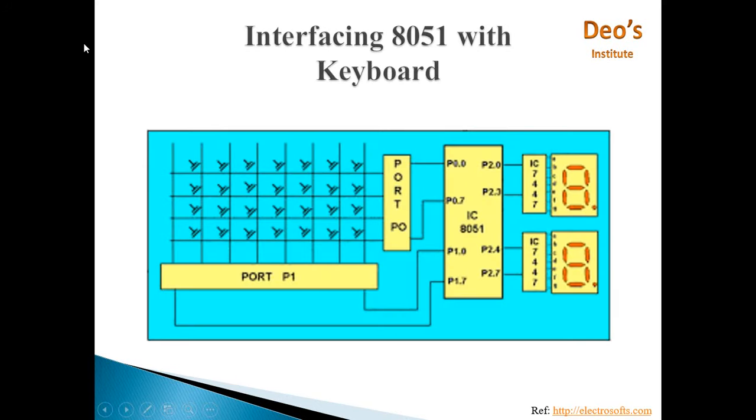You can extend this matrix formation up to 8 by 8, so there you can interface 64 keys. Next is the interfacing diagram. Here 8 rows are connected to port P0, 8 columns are connected to port P1.